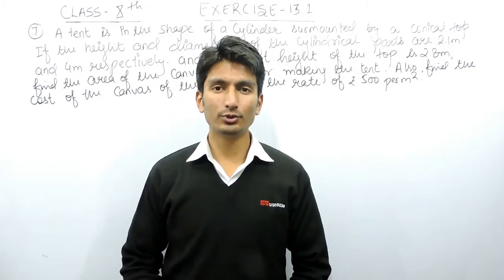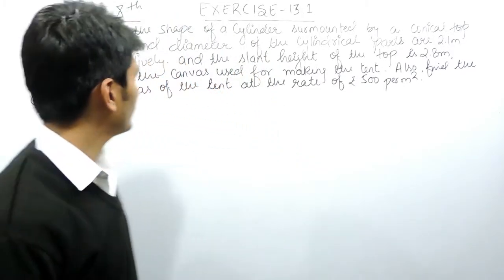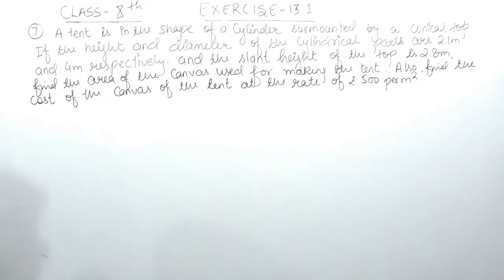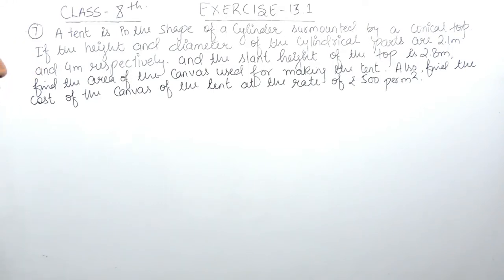Hello everyone, we are from True Maths. In this video we are going to solve question number 7 of exercise 13.1. The question says: a tent is in the shape of a cylinder surmounted by a conical top. If the height and diameter of the cylindrical part are 2.1 and 4 meters respectively, and the slant height of the top is 2.8 meters, find the area of the canvas used for making the tent. Also find the cost of the canvas at the rate of rupees 500 per meter square.